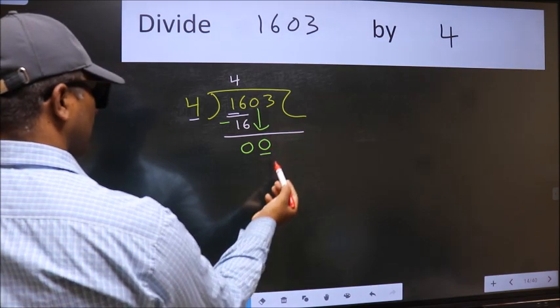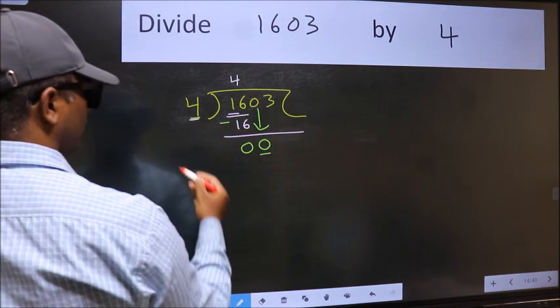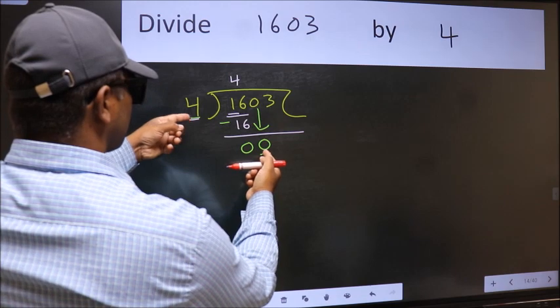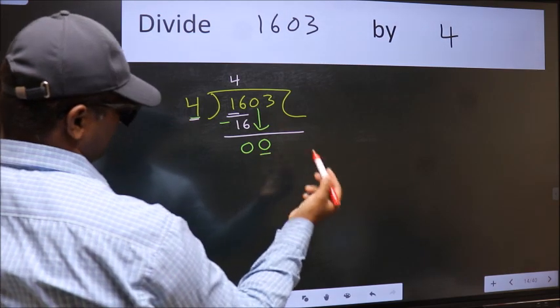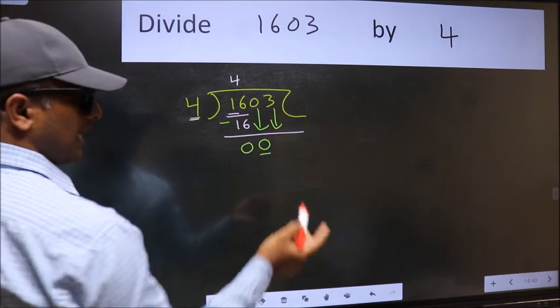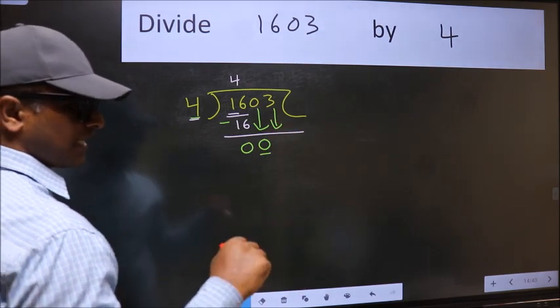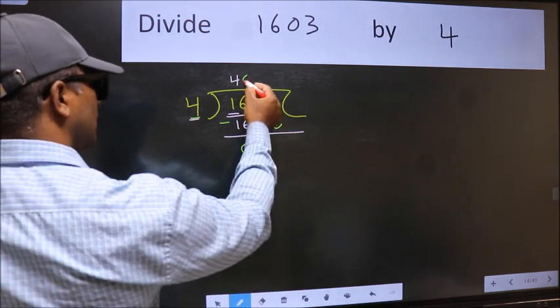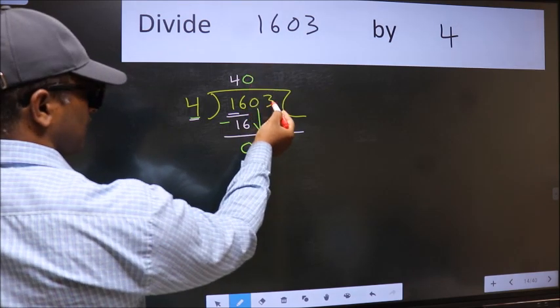Now, here we have 0 and here 4. 0 is smaller than 4. So, we should bring down the second number. And the rule to bring down the second number is we should put 0 here. Then only we can bring it down.